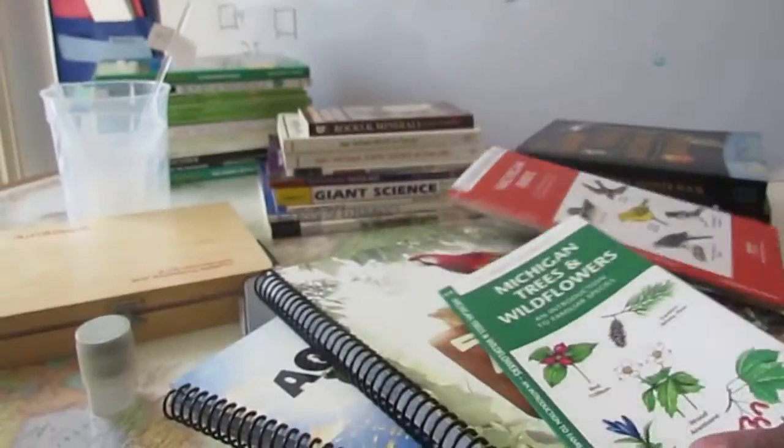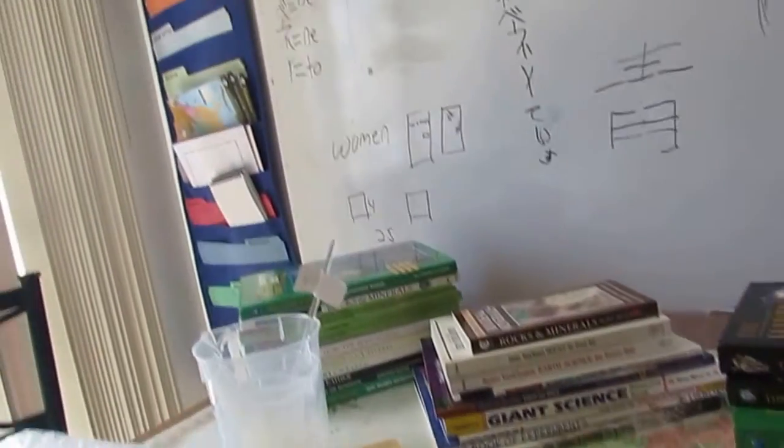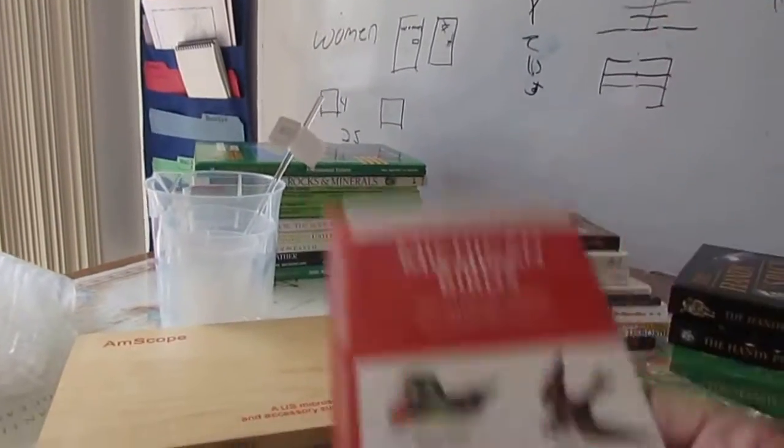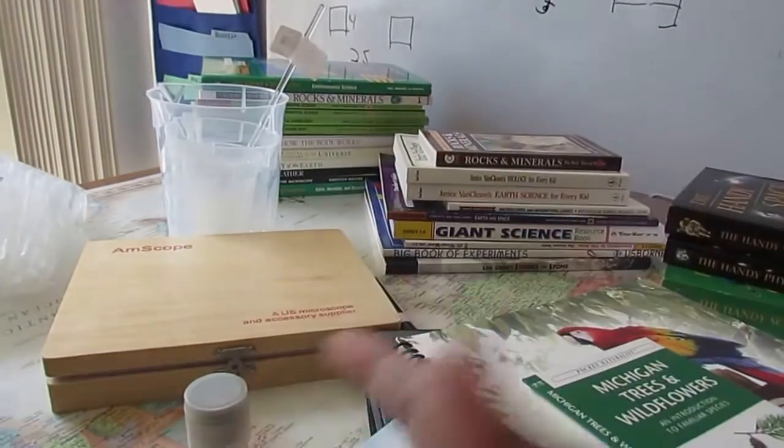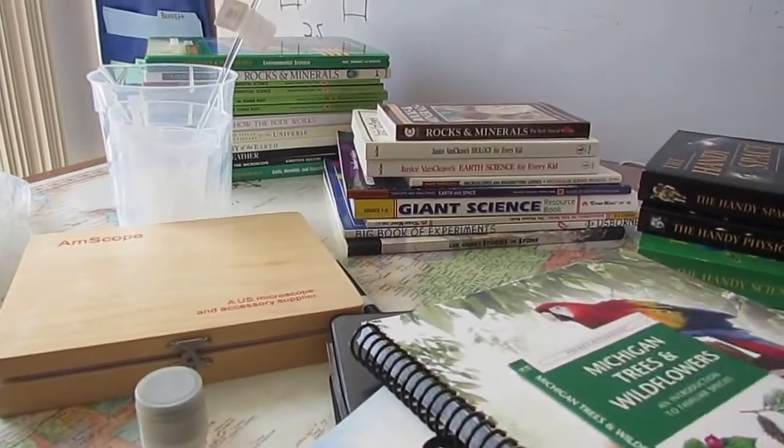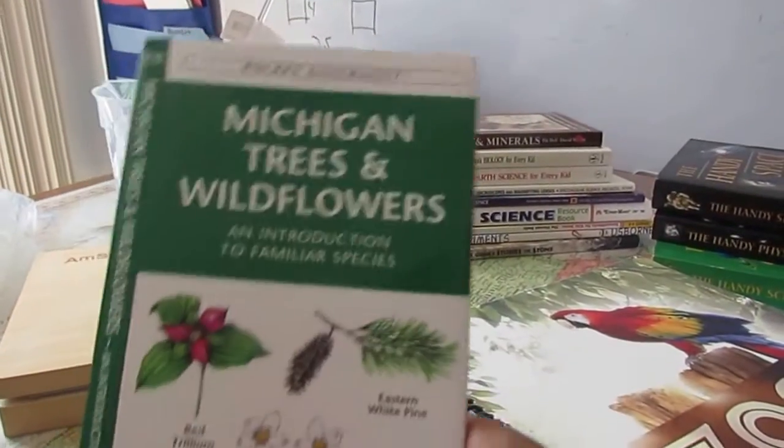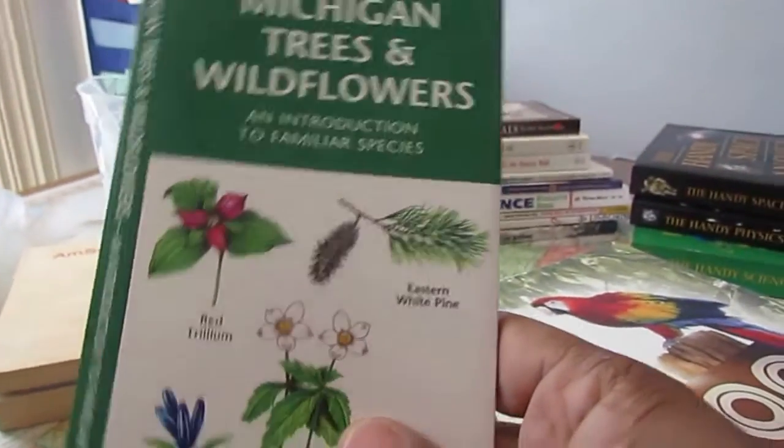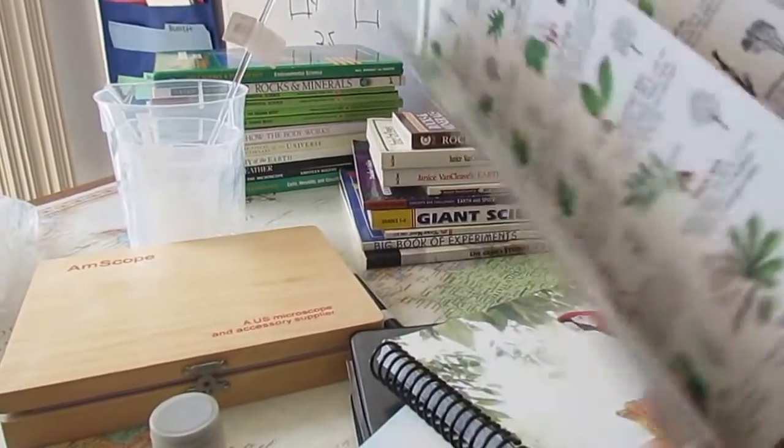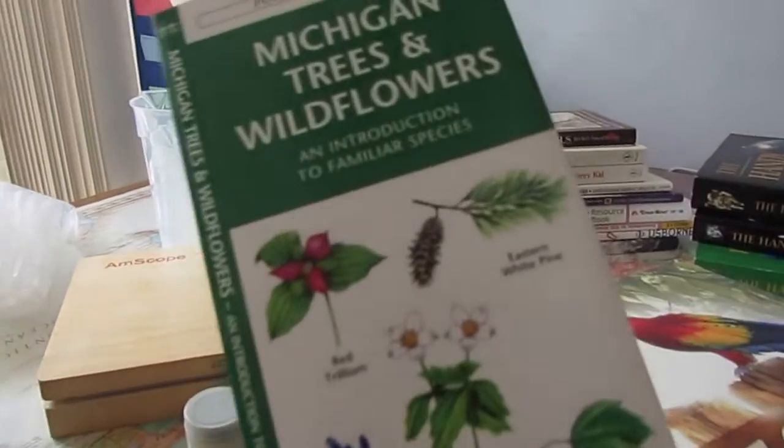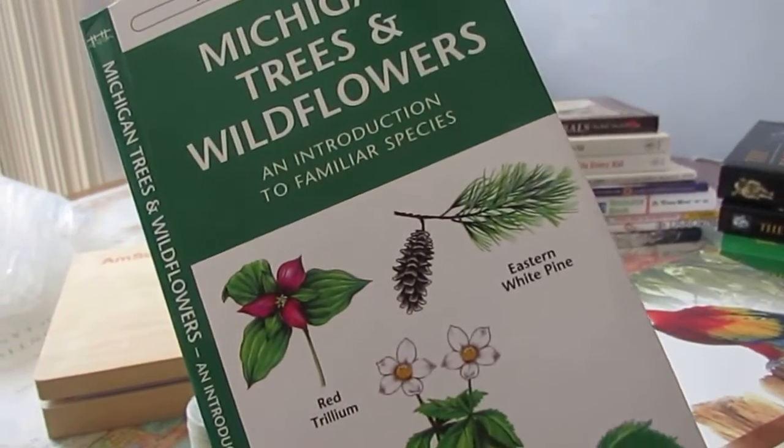I also have Birds of Michigan because we live in Michigan. So I found this with all the different types of birds. Trees of Michigan. Michigan Trees and Wildflowers. It has the same things in it. And I like it because it's small and I can just throw it in my purse or a book bag.